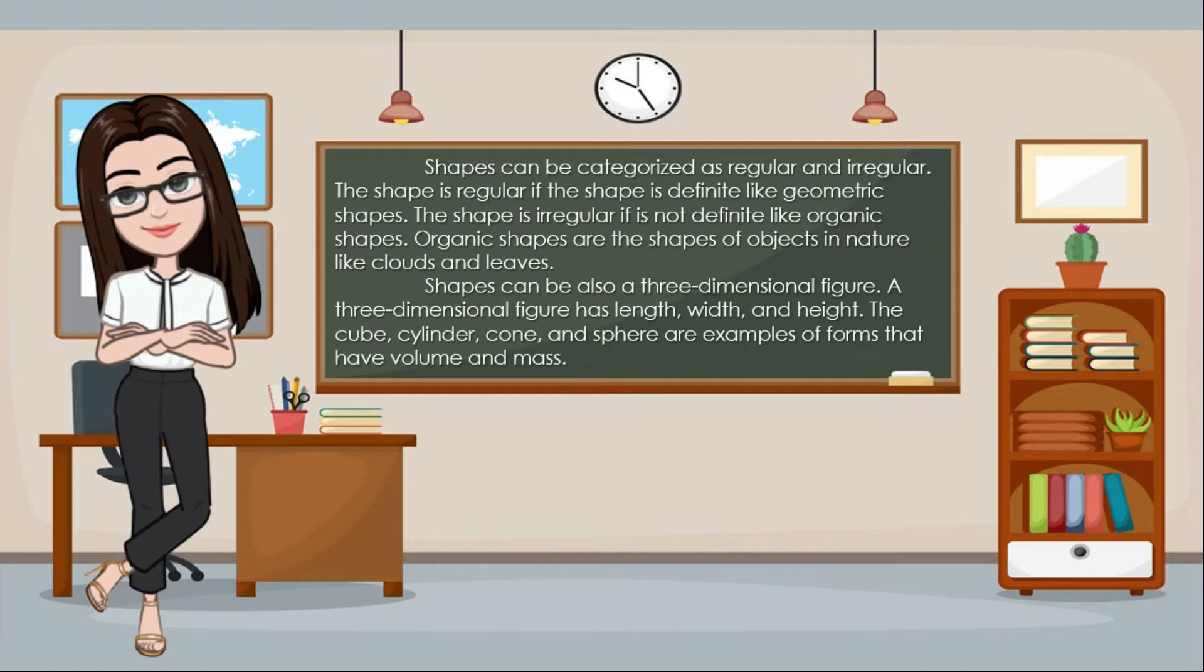Shapes can be categorized as regular and irregular. The shape is regular if the shape is definite like geometric shapes. The shape is irregular if it's not definite like organic shapes. Organic shapes are the shapes of objects in nature like clouds and leaves.